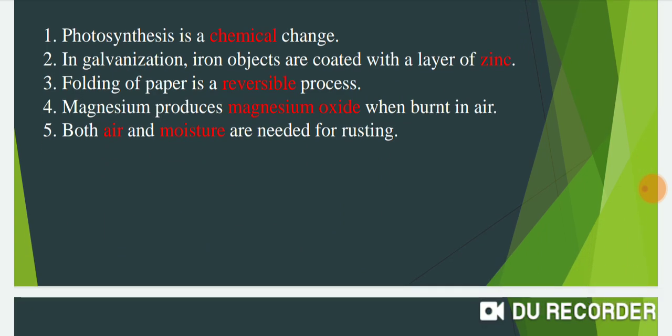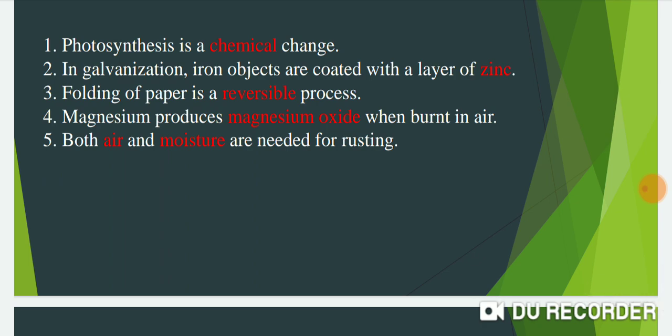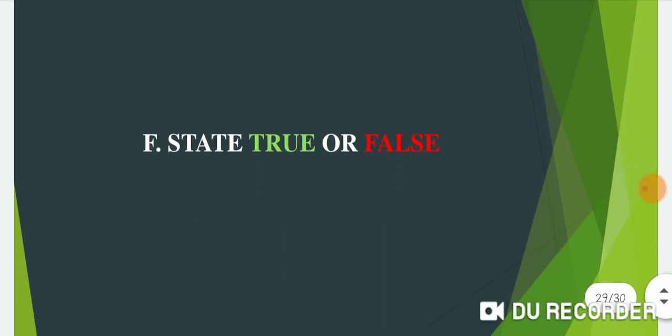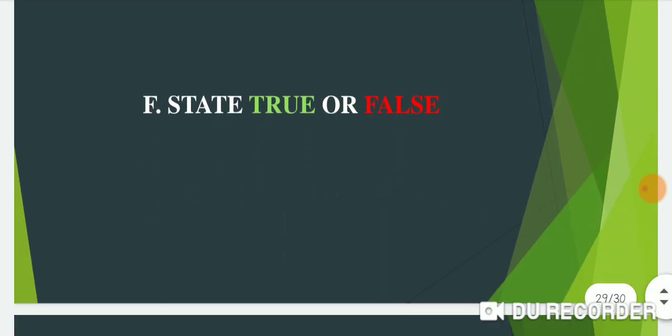Next question: Fill in the blanks. Question one — photosynthesis is a chemical change. Question two — in galvanization, iron objects are coated with a layer of zinc. Question three — folding of paper is a reversible process. Question four — magnesium produces magnesium oxide when burnt in air. Question five — both air and moisture are needed for rusting.